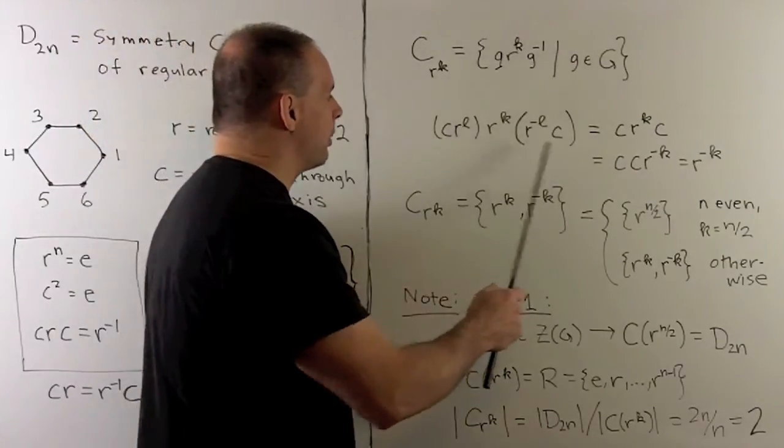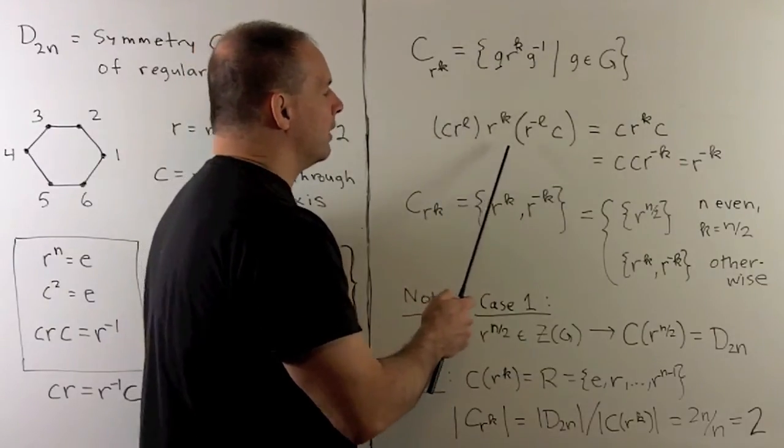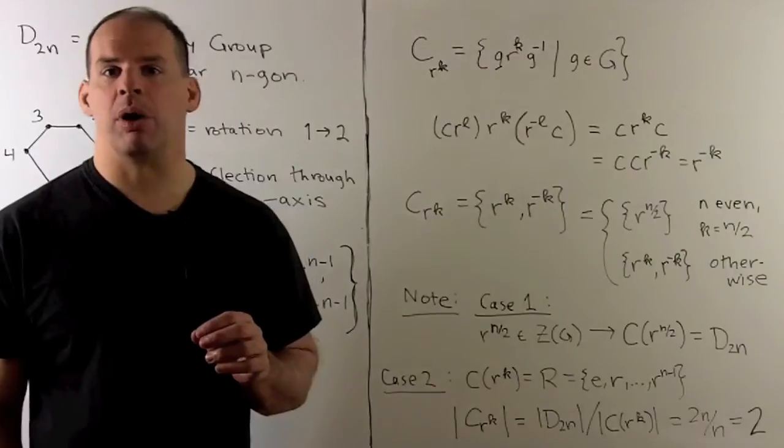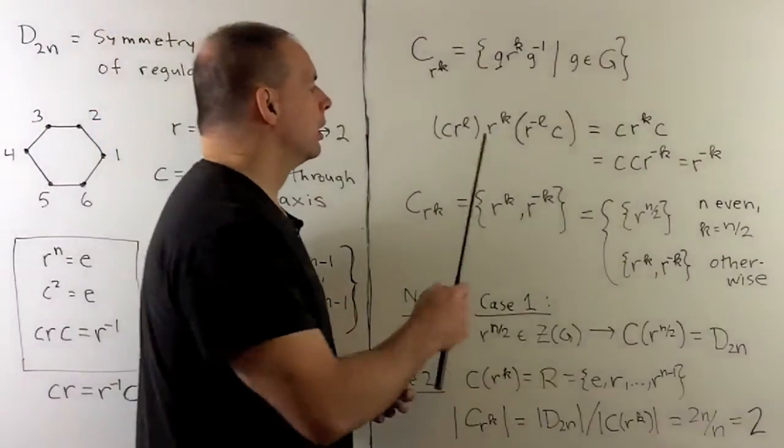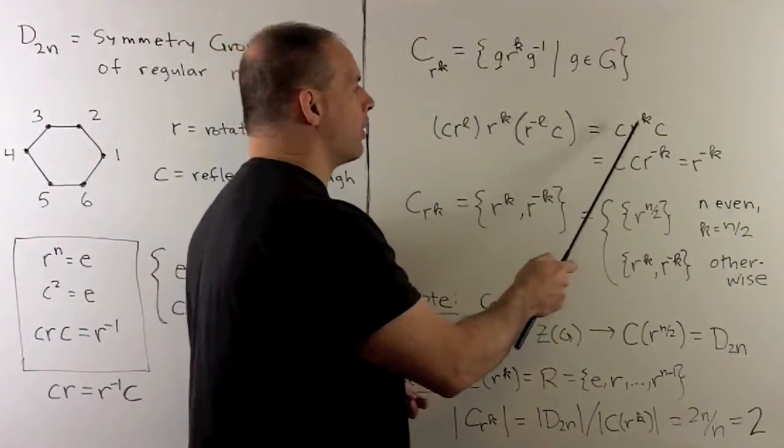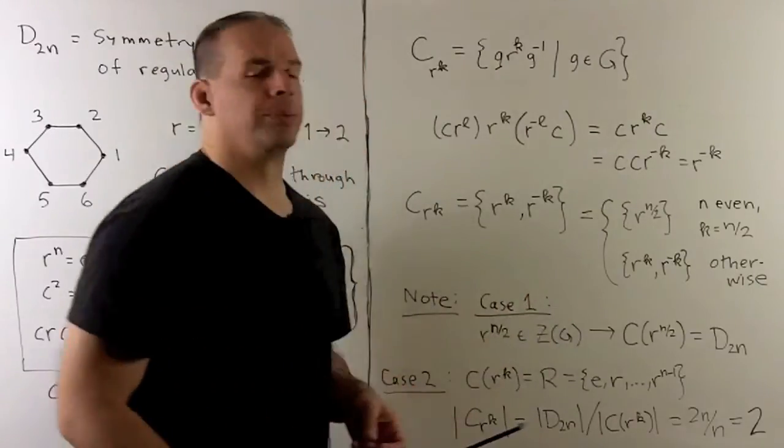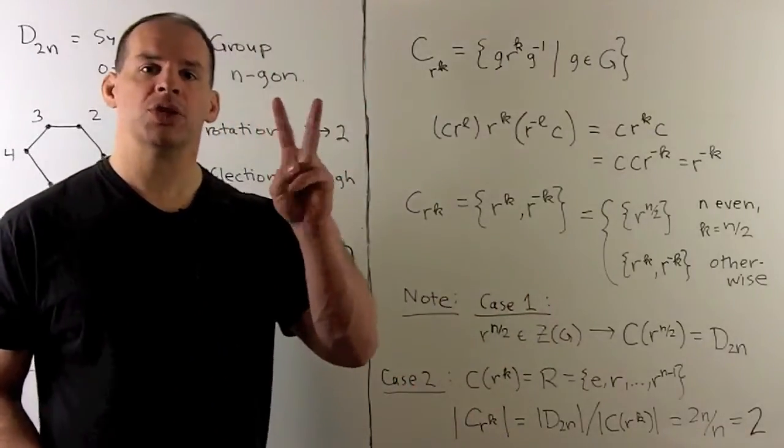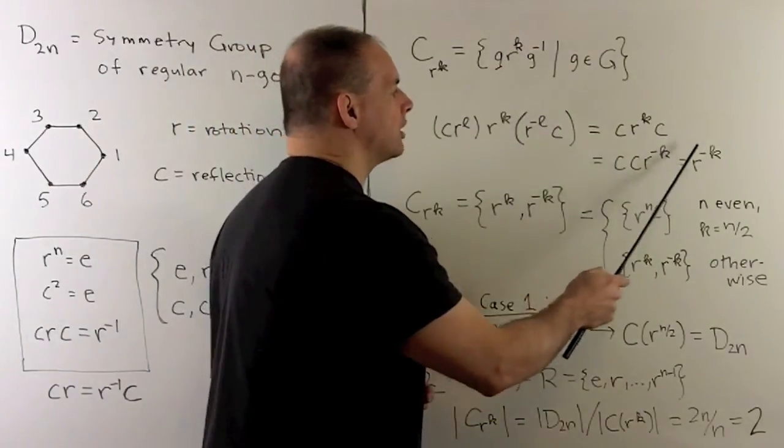If we conjugate by reflection, I'll take c r to the l. We have the inverse. Recall, inverse of a product is reverse the order, each term picks up an inverse. On the inside, r to the l cancels with r to the minus l, so we have r to the k. Then we have the c's on the outside. We use the rule to switch, or note that we're just conjugating, and we get r to the minus k.